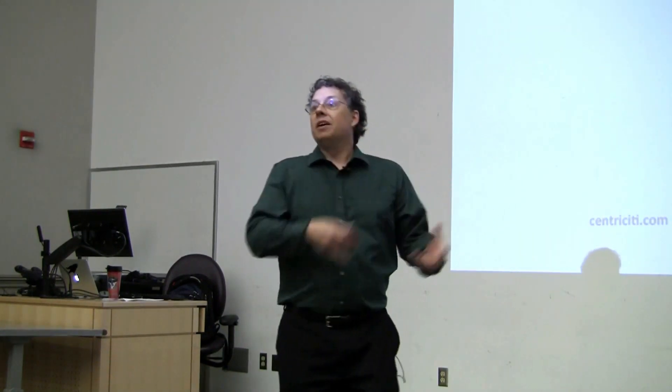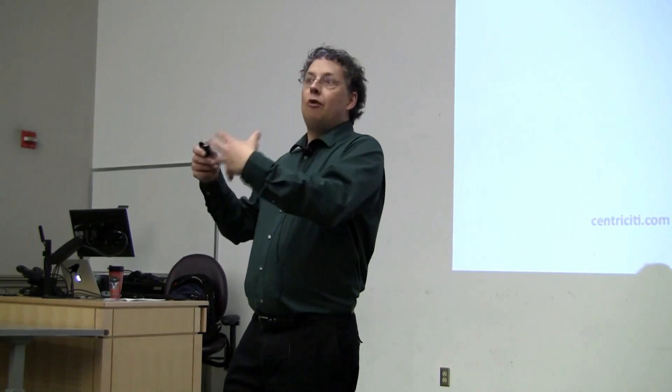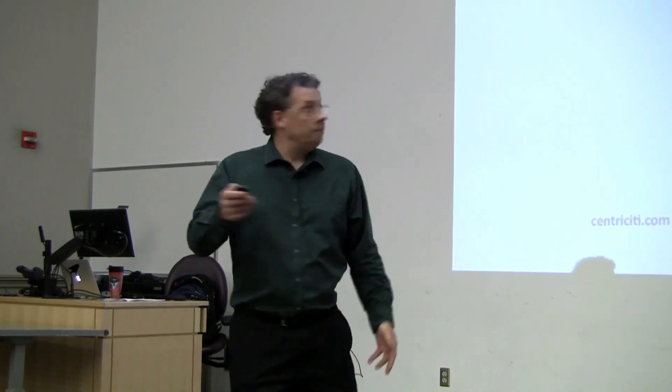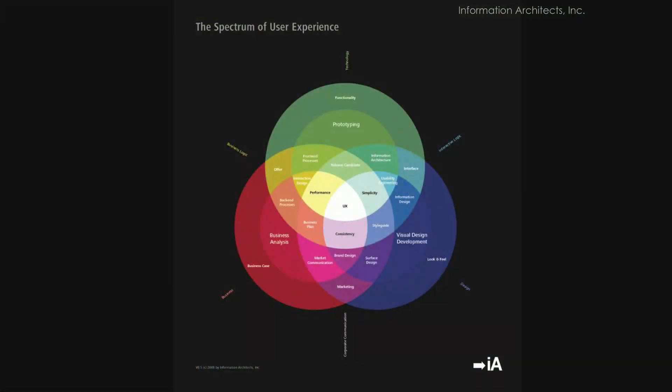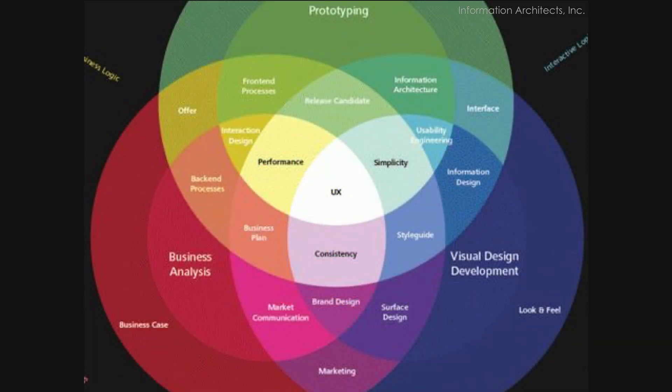They're taking a form that means something and putting data into it without respecting that meaning. Here's another one: the spectrum of user experience. It's very pretty, with lots of nice words like business analytics, visual design development, and prototyping. Zooming in, we see user experience at the center, and style guide and information design, and you try to figure out how it all fits together — but there seems to be no rhyme or reason to any of the arrangements, let alone to the meanings of the overlaps. Another glass slipper.